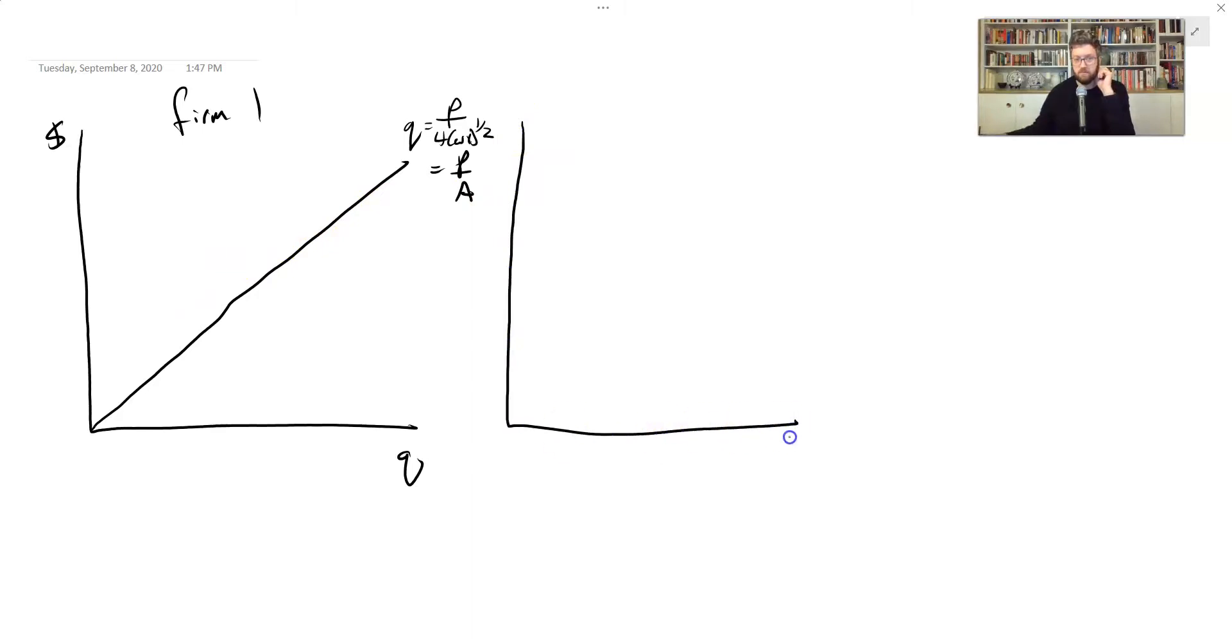Suppose firm two is over here and it has a different type of production function such that its cost curve is kind of funny looking. It starts very low, but then it gets high. And then let's have one other firm be over here. In fact, let's not have one other firm because we only need two to illustrate the point and we're running out of room anyway. So I'm going to do capital Q to indicate that this last graph is for the whole market. And suppose there's just these two firms. How would we derive a market curve from these two guys?